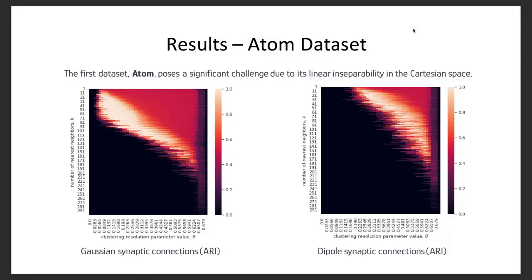The Atom dataset presents challenges due to linear inseparability in Cartesian space. As the number of nearest neighbors increases, maintaining a constant RAND metric value requires inherent clustering resolution. Higher neighbor counts enable networks with Gaussian connections to better distribute among data points, forming clearer clusters. In the left figure, the parameter window size theta for the maximum RAND metric value expands with increasing nearest neighbors in Gaussian synaptic networks until a threshold of approximately k equal to 75, where it decreases, indicating potential false cluster detections due to excessive network complexity. In contrast, networks with DeepL connections exhibit less sensitivity to neighbor count changes, with a smaller maximum window size compared to Gaussian networks, and can only identify a coarser distinction among the data.